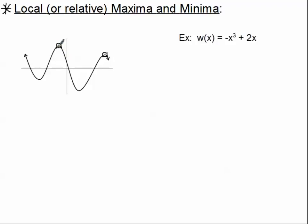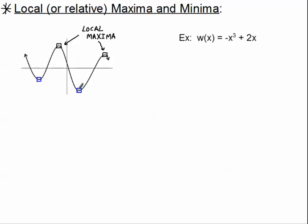So each one of these is called a local maximum. Together, they're called local maxima — I'll do them all in uppercase. And on the flip side, we've got down here a minimum. We've got a localized minimum down here, and another localized minimum down here. And I shall call them minima. So we've got the local minima — I'm going to do them all in lowercase — right here, and right here.